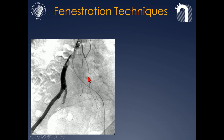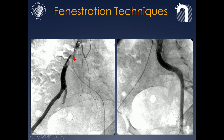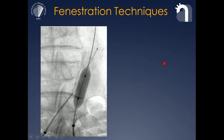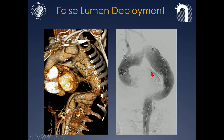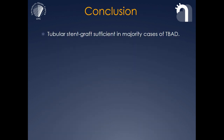That brings me to fenestration techniques that are essential in treating chronic dissection. Sometimes you can have perfusion from the false lumen to one organ and the true lumen to the other. Standard fenestration techniques can use stiff wire ends or needles to create connections between these lumens. It can also be helpful to deploy your stent graft in the false lumen, as in this case where the true lumen would have been too small to accept overlay of two standard thoracic stent grafts. We fenestrated proximal to the celiac artery and were able to deploy the stent graft in the false lumen to allow flow to the abdominal aorta.